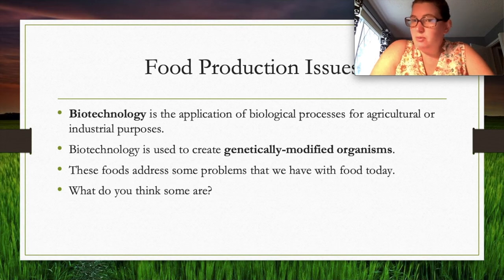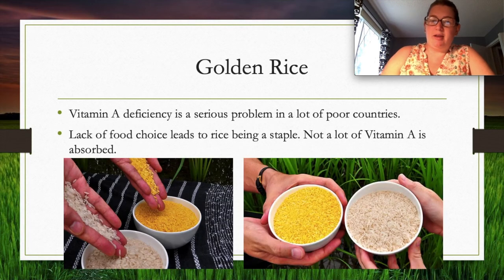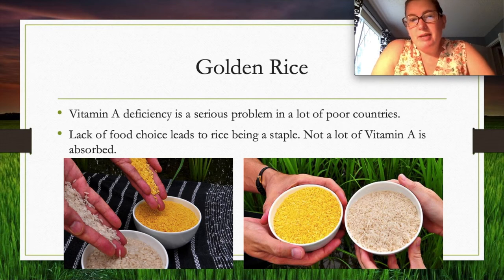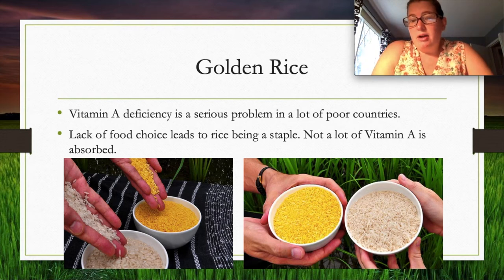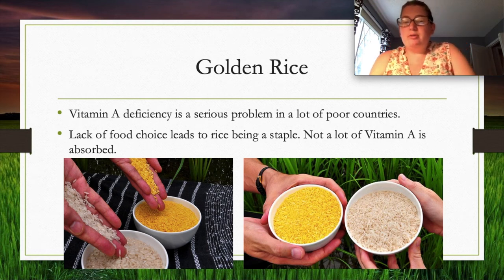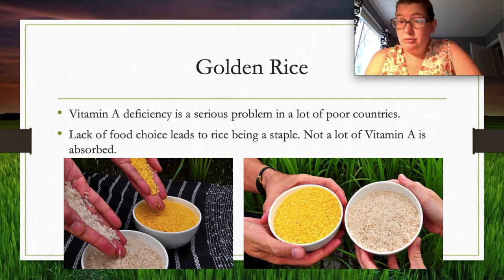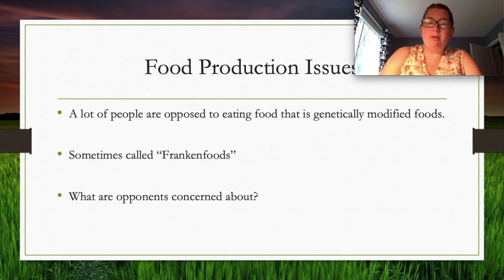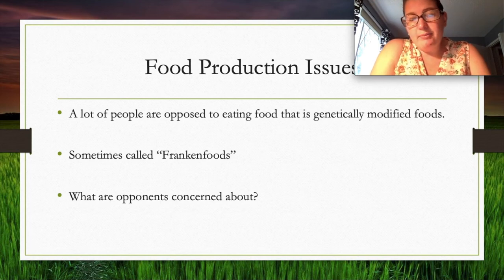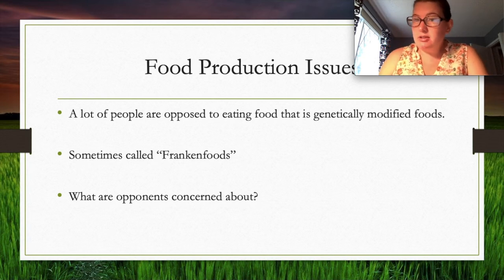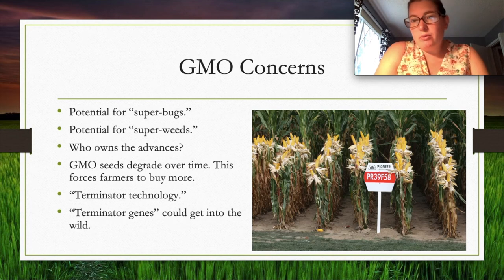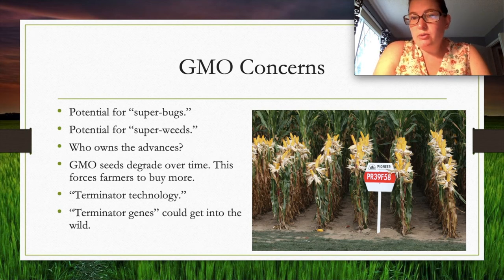One example of biotechnology is golden rice — vitamin A deficiency is serious in areas where rice is a staple and food choices are limited. Scientists created a variety of rice with vitamin A, called golden rice, to help people get that needed nutrient. However, many people are opposed to eating genetically modified foods — sometimes called 'Frankenfoods' — and there are concerns about the health impacts. GMO stands for genetically modified organism.